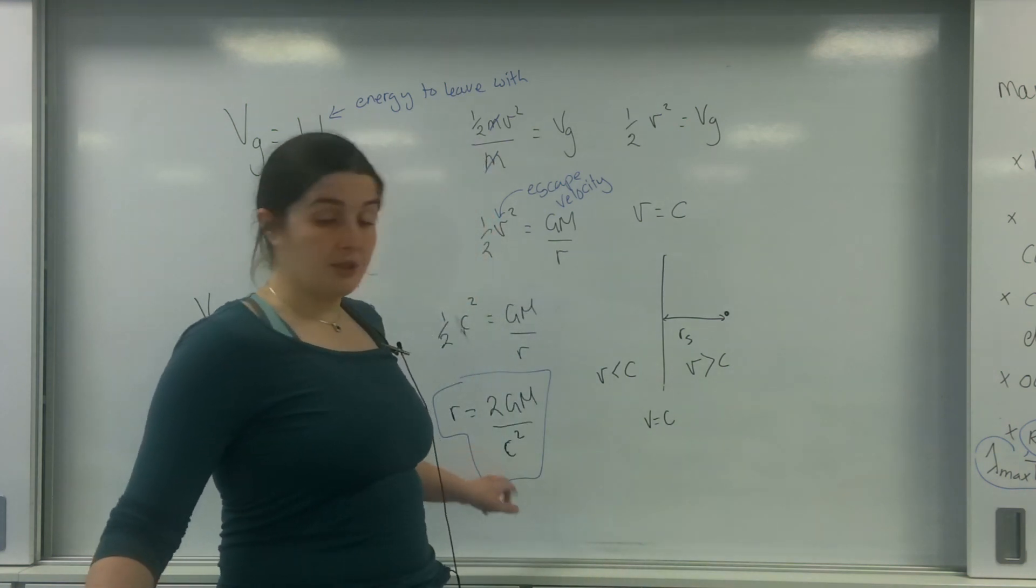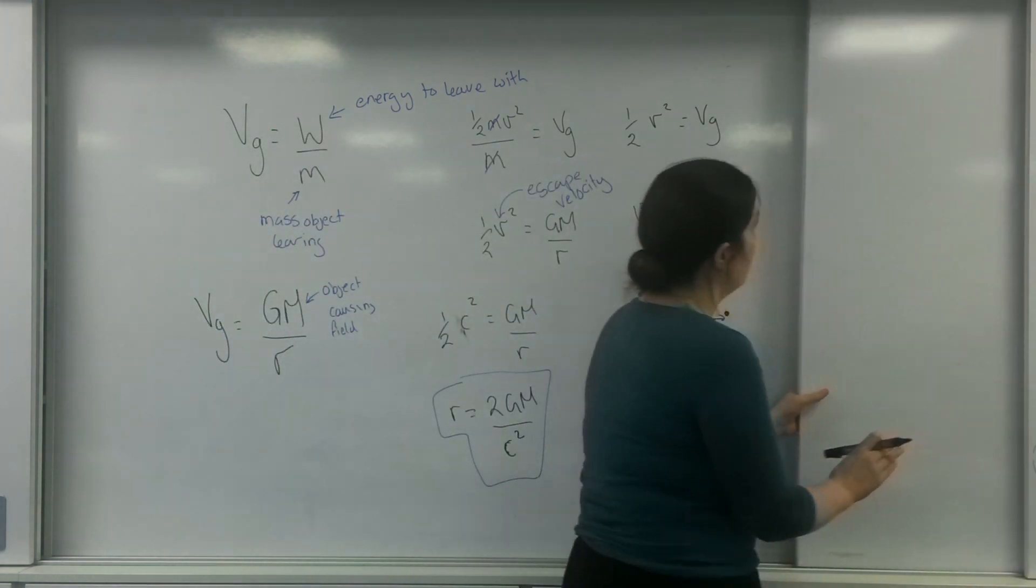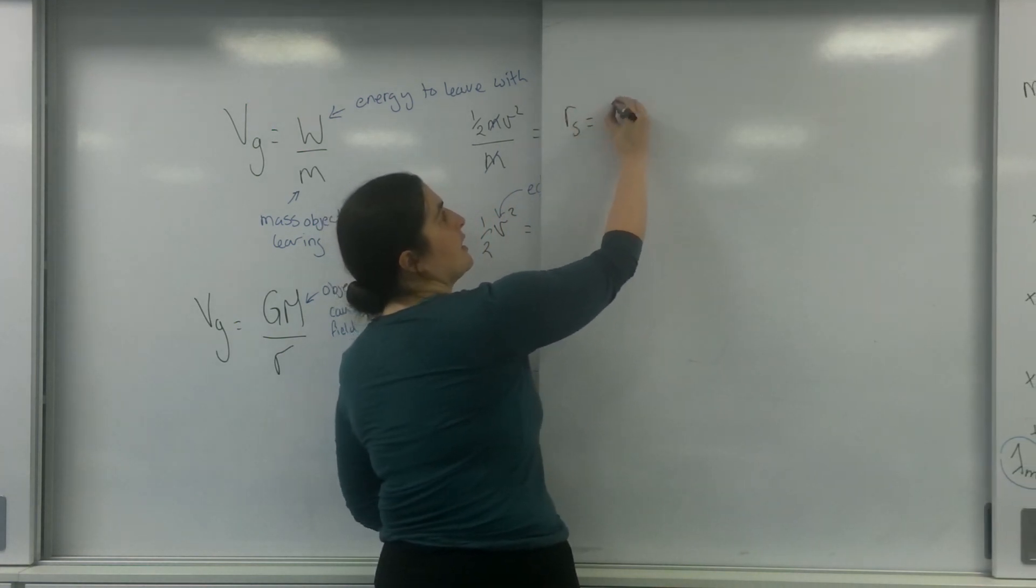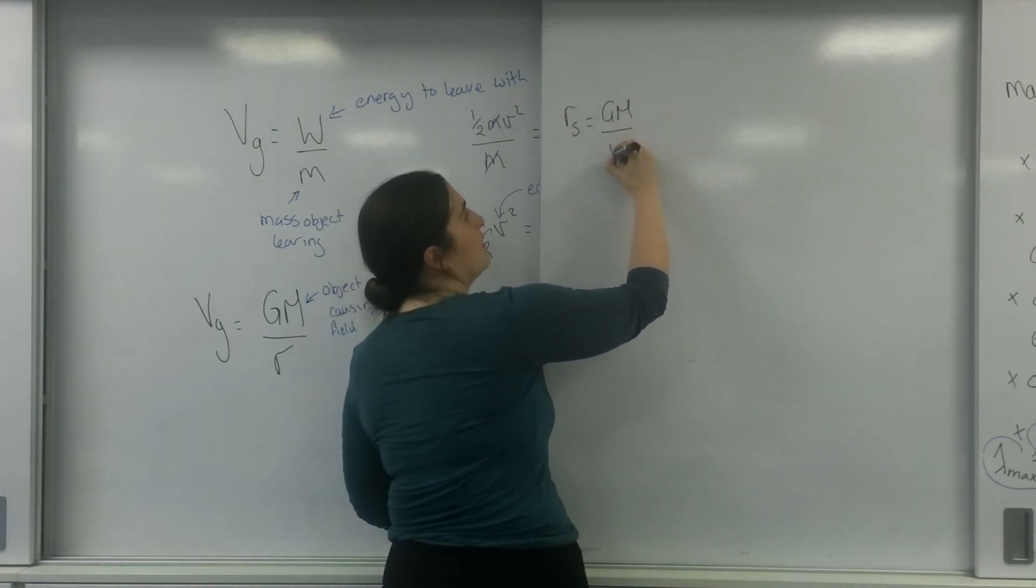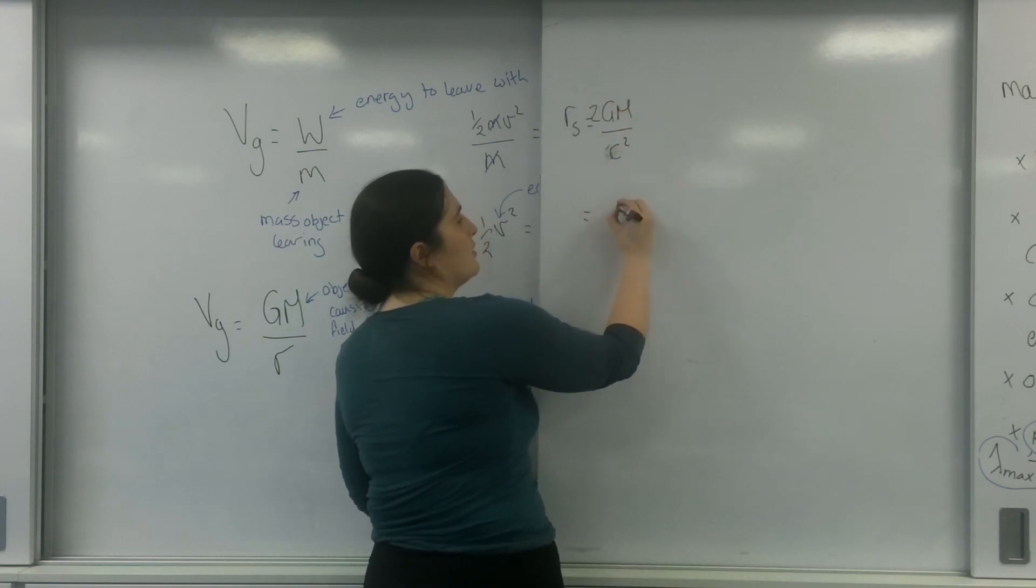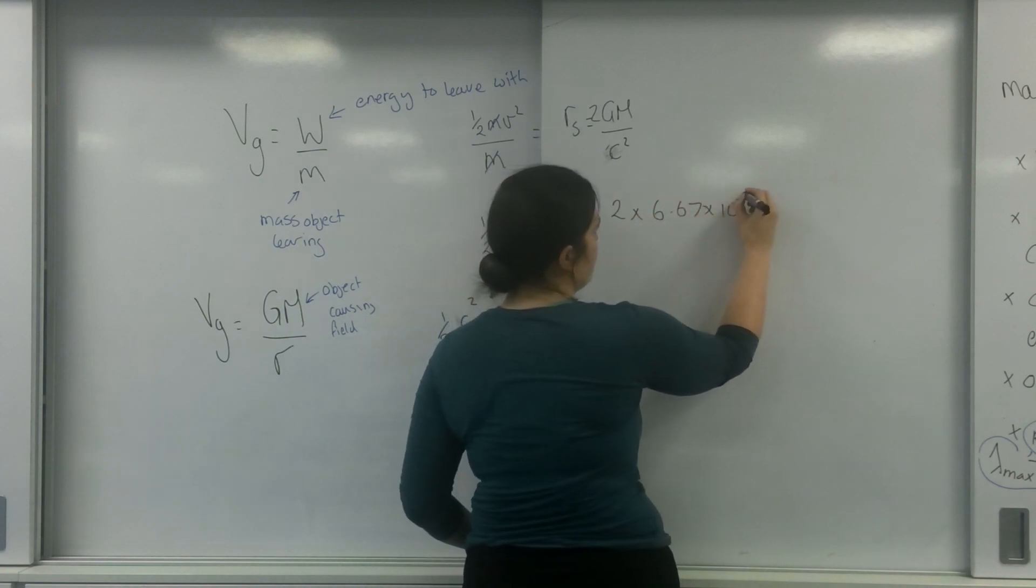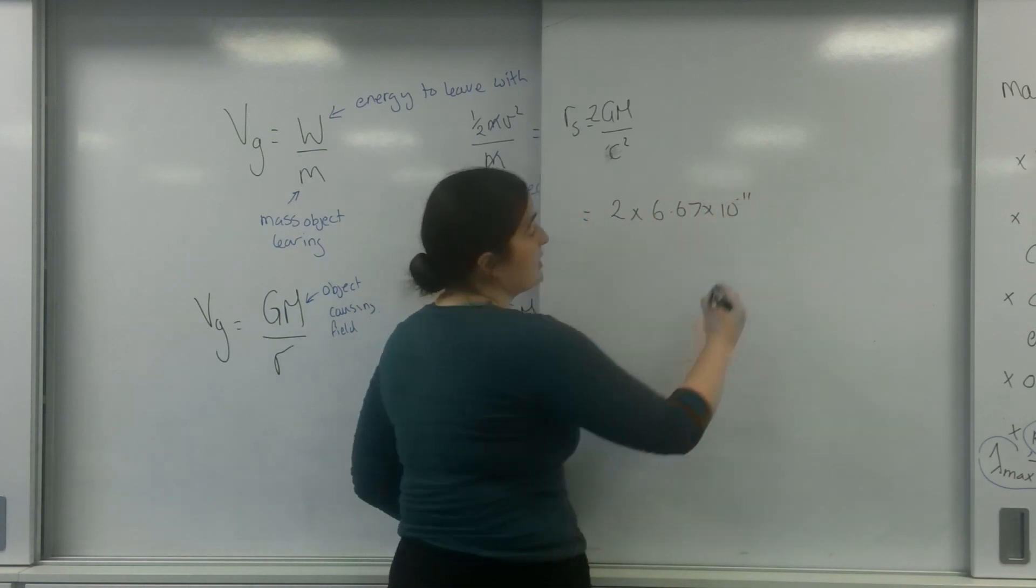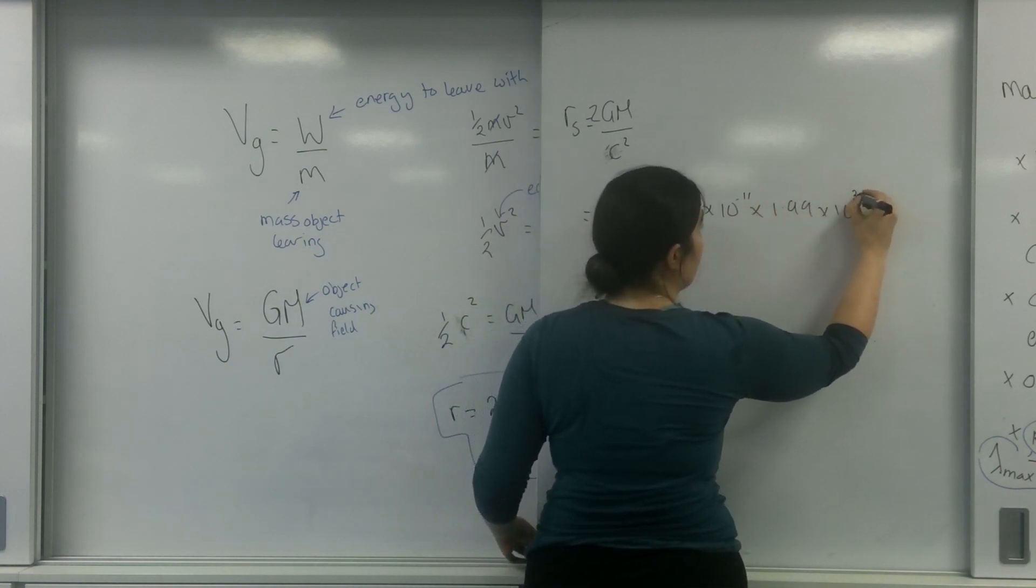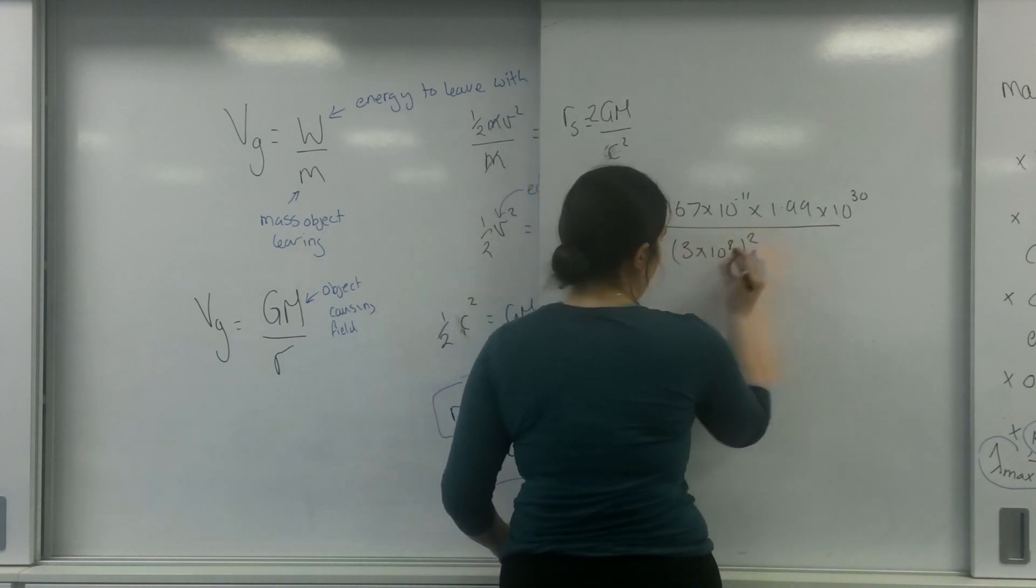So let me give you an example of using this formula with our own sun. So the Schwarzschild radius of our sun: 2 times G, which is 6.67 times 10 to the minus 11, times by the mass of our sun, which is 1.99 times 10 to the 30, over 3 times 10 to the 8 squared.